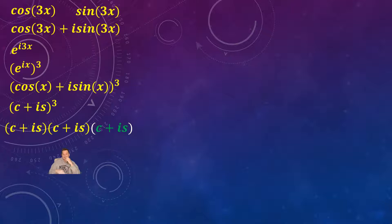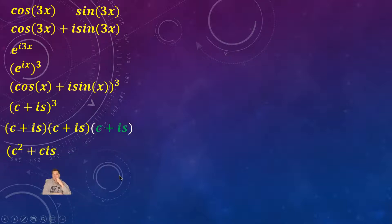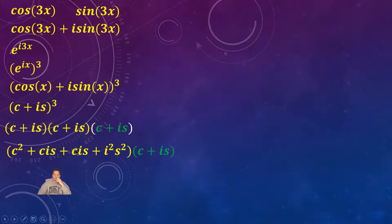I left one of the c plus i·s factors in green. I'm going to multiply the two yellow ones first using FOIL: c squared plus c·i·s plus another c·i·s plus i squared times s squared. So I took c plus i·s and foiled it with c plus i·s — that's just FOIL.